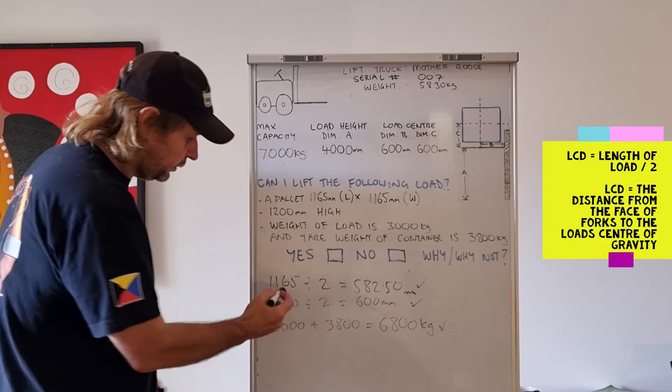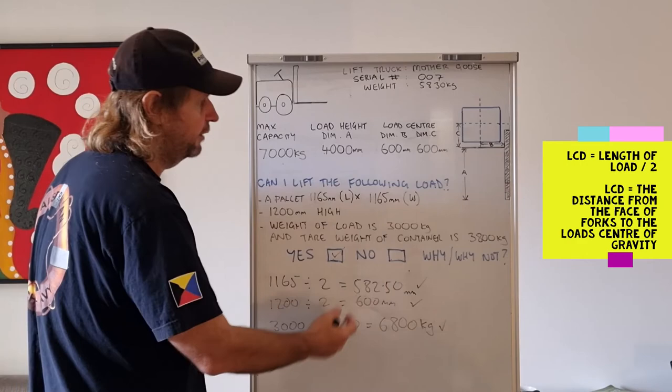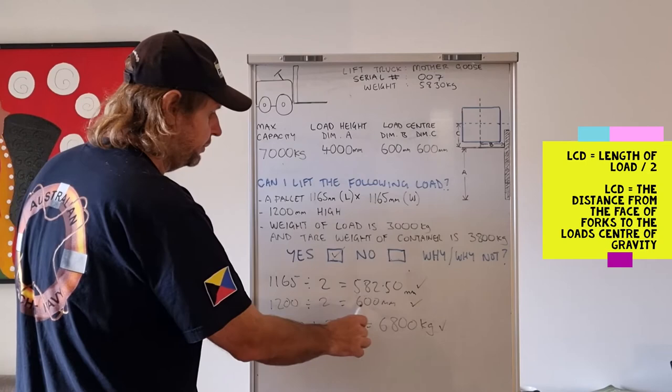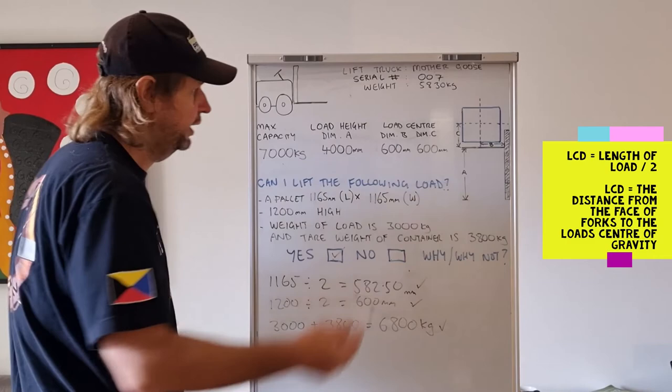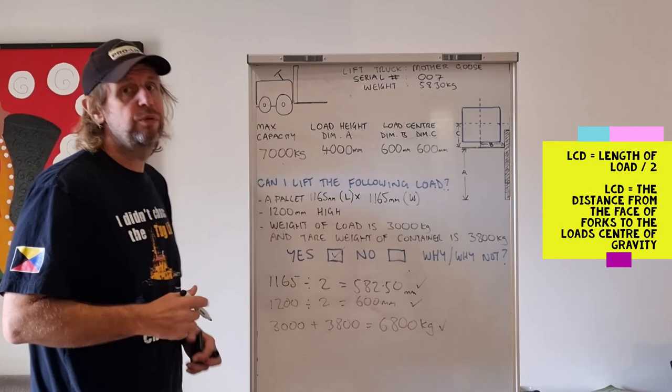Don't forget to put millimeters and kilos at the end, and also your reason. Why can we lift this? The answer is yes. Why? 1,165 divided by 2 equals 582.5 millimeters. It falls within the load center distance. 1,200 divided by 2 equals 600. It is within the load center distance. So 600 is on the line. We can do it. 3,000 plus 3,800 equals 6,800 kilos. It is less than the maximum rated capacity of that forklift. So write those reasons in when you tick that yes.